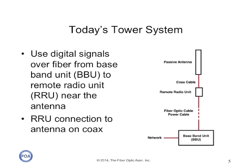Today's towers are moving to a digital fiber optic system, with a remote radio unit at the top of the tower that converts the digital signal to analog and drives the passive antenna over copper coax cable. The cables up the tower have fiber for the signal and electrical conductors to power the remote radio unit, usually inside an armored protective jacketing. The baseband unit on the ground connects to the network either by fiber optic cables or sometimes microwave antennas.